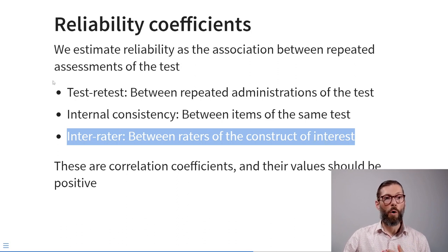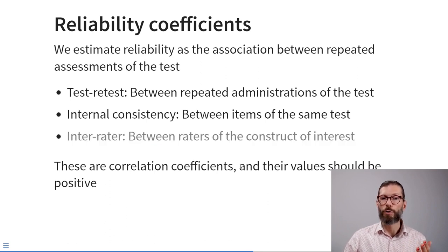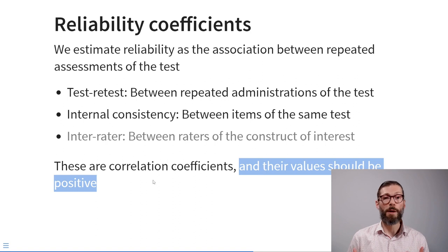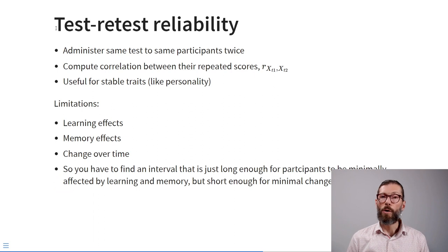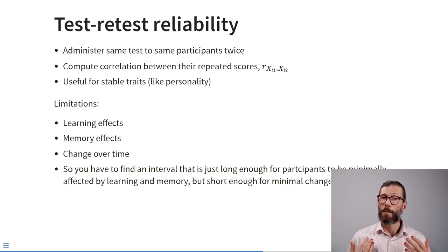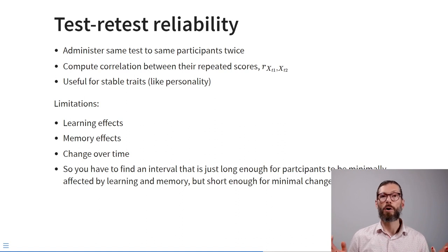In general, all of these reliability coefficients are essentially correlation coefficients, and their values should be positive. To compute test-retest reliability, you administer the same test to the same participants twice and calculate a correlation between their repeated scores — the correlation r between scores x at time one and scores x at time two.